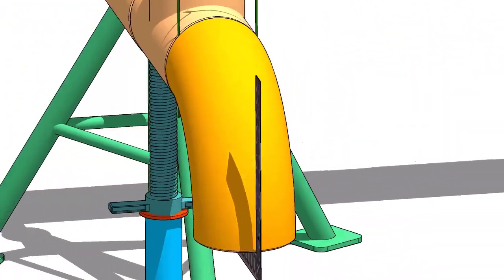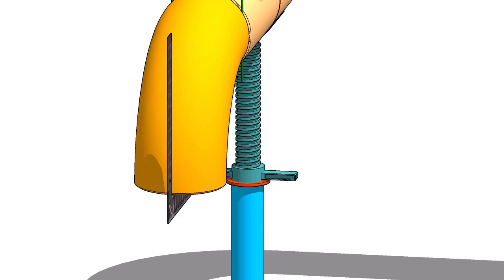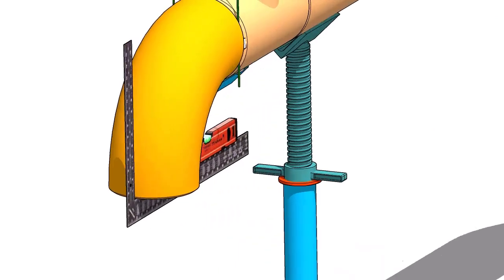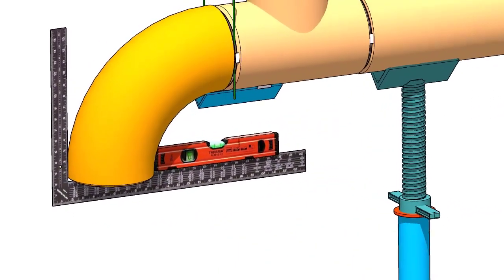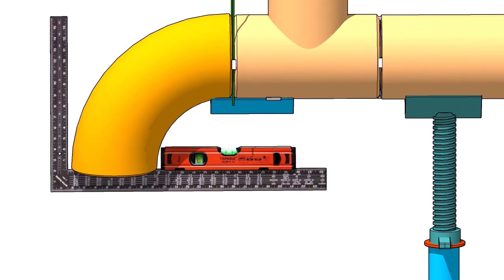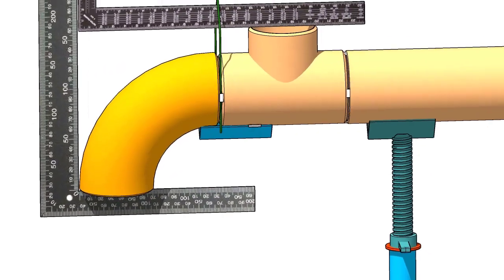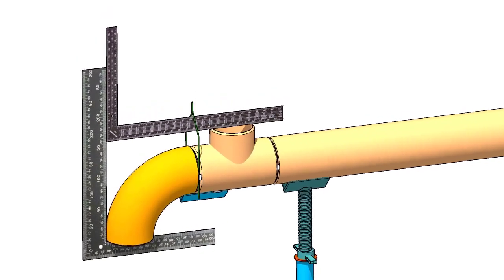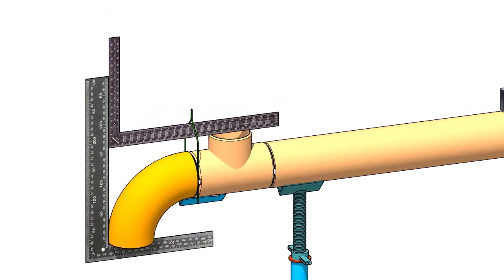Take the right angle and spirit level longitudinally and maintain the elbow face level. Check that the branch face and the elbow face are at right angles to each other.